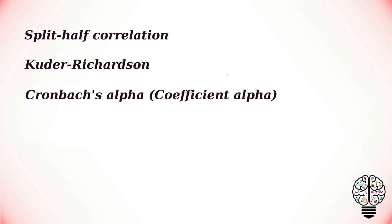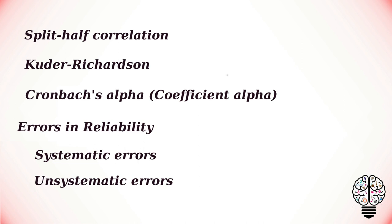Psychometric tests can have two different categories of errors. They are systematic and unsystematic. Systematic errors are factors that impact the test construction and are inbuilt in the test. Unsystematic errors are resulting from random factors such as how the test is taken or given.